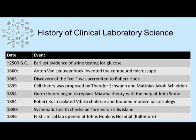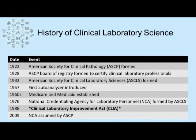In 1896, the first clinical lab opened at Johns Hopkins Hospital in Baltimore, Maryland. In 1922, the American Society for Clinical Pathology, or ASCP, was formed. In 1928, the ASCP Board of Registry was formed to certify clinical laboratory professionals. Then in 1933, the American Society for Clinical Laboratory Science was formed. Industrial technology for counting particles was repurposed in the clinical lab to count cells — known as bioelectrical impedance — and that technology was used for one of the first auto analyzers in the clinical lab in 1957.